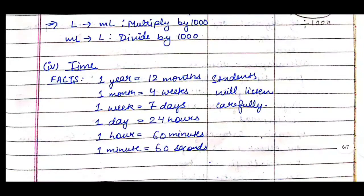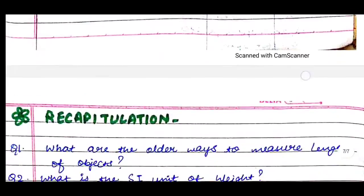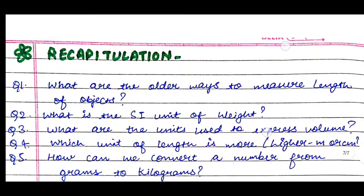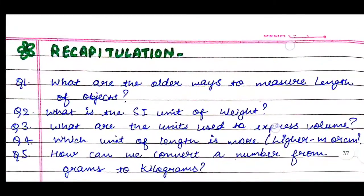For time, we write the facts: 1 year = 12 months; 1 month = 4 weeks; 1 week = 7 days; 1 day = 24 hours; 1 hour = 60 minutes; 1 minute = 60 seconds. Students will listen carefully — they already know most of these.